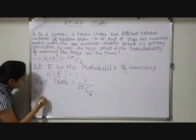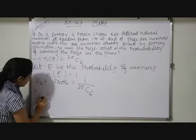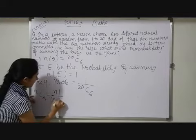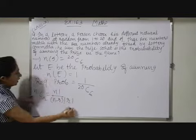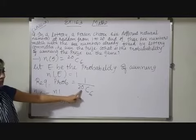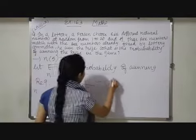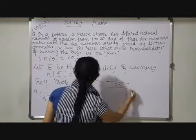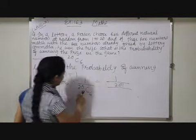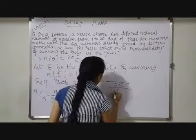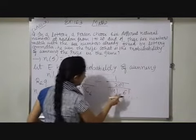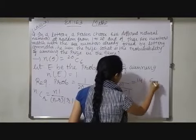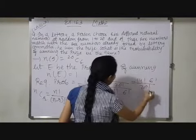So combination formula you have studied that nCr equals to n factorial upon n minus r factorial into r factorial. So here n is 20 and r is 6. So here we will have 1 upon n factorial that is 20 factorial upon n minus r, 20 minus 6 that is 14 factorial into 6 factorial. So the denominator will go in the numerator. So 14 factorial into 6 factorial upon 20 factorial.